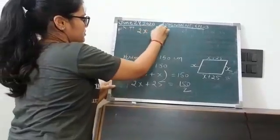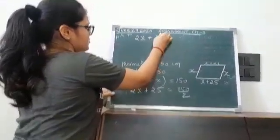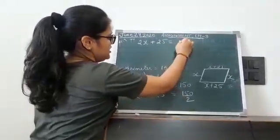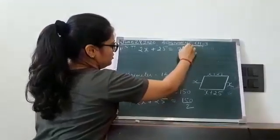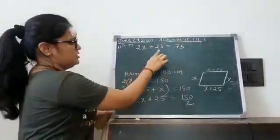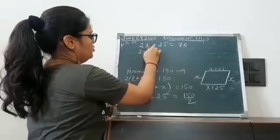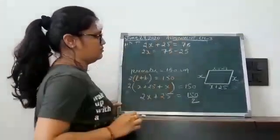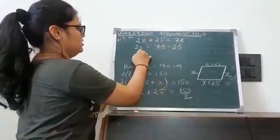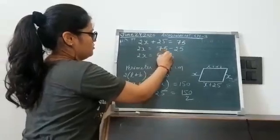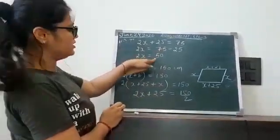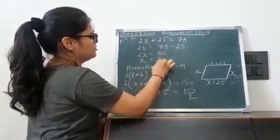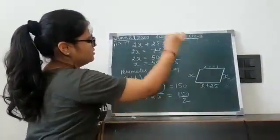So 2x plus 25 equals 150 divided by 2, which equals 75. Take this 25 to the other side: 2x equals 75 minus 25, which is 50. So 2x equals 50, which means x equals 50 divided by 2, that means 25.